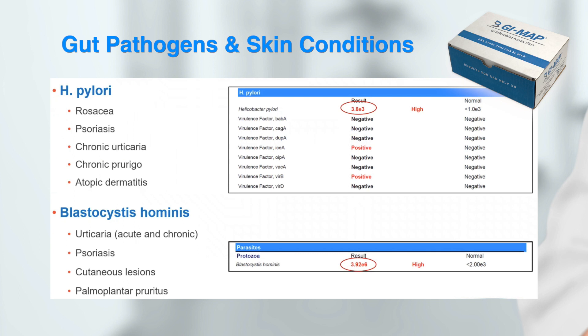Blastocystis hominis is a parasite that lives in the colon. This parasite has been linked with urticaria — both acute and chronic — psoriasis, cutaneous lesions, and palmoplantar pruritus.